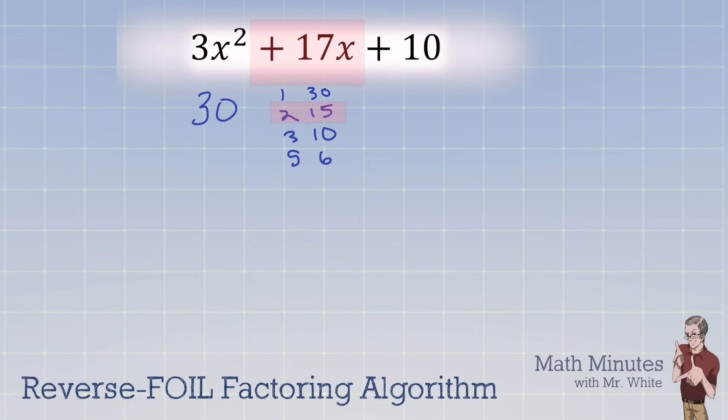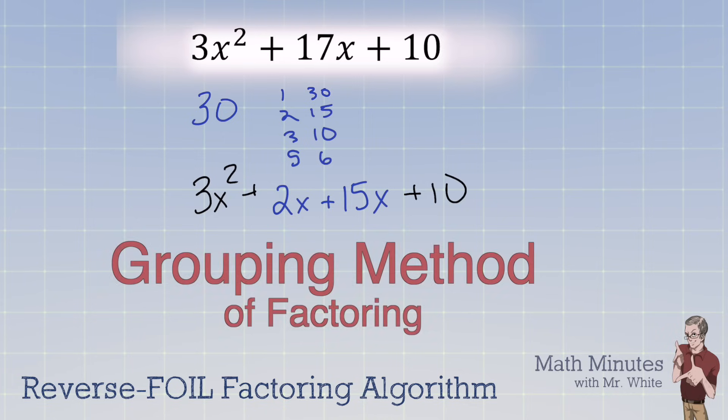So we're going to take that 17x and we're going to write it down below. But instead of writing 17x, we're going to split it into 2x plus 15x. I'm going to bring down the other terms that we have not done anything with here. And we have a nice polynomial. Now it has four terms and we can do what's called the grouping method.